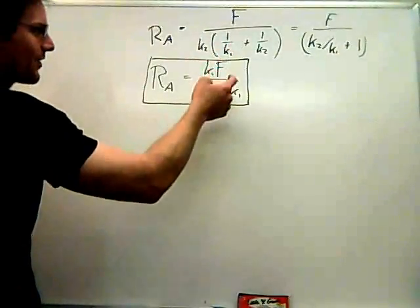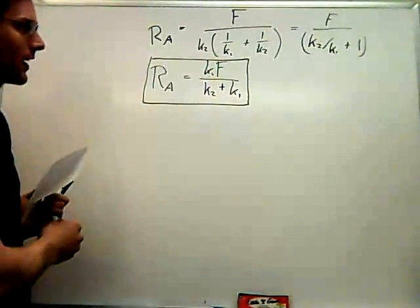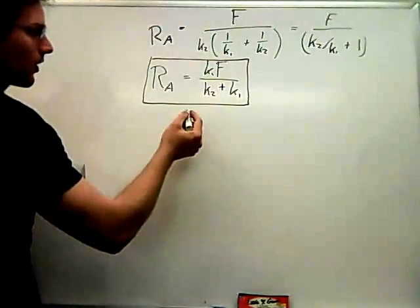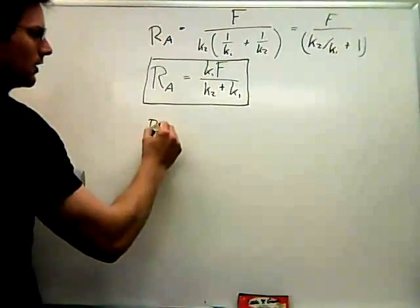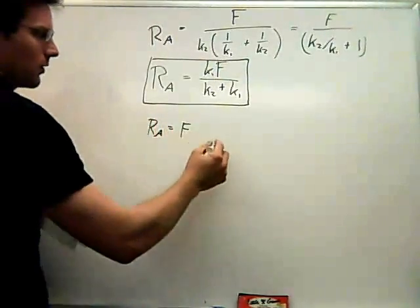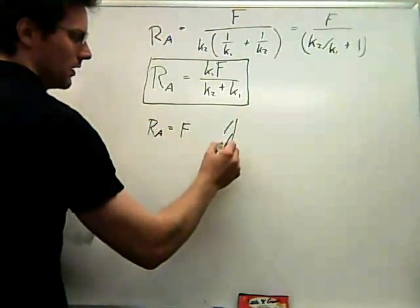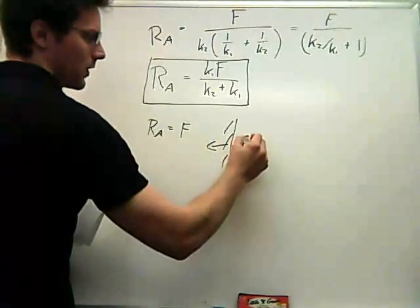So I've got F over this. So if I didn't have the second spring, then K2 would be zero, and then I would have RA equal to F, which is the same thing you would expect if you just had one spring.